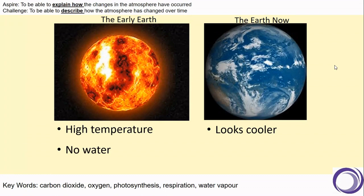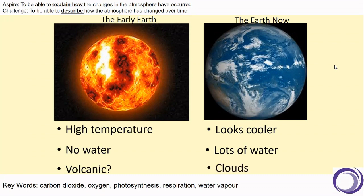There's no water on the early Earth — you can't see any on the image and it looks too hot for there to be liquid water on the surface. Whereas the Earth now there is lots of water. The image also suggests that the early Earth looks volcanic, like lava. But the Earth now there's clouds, there's water, and there's crust for people to stand on.